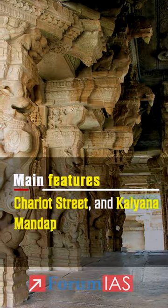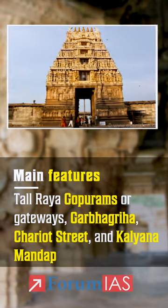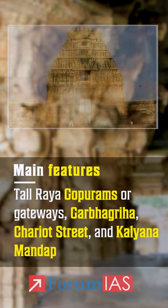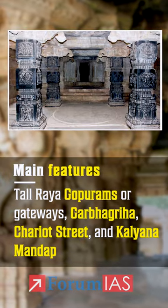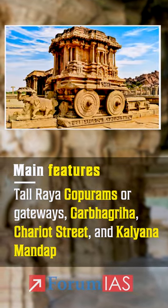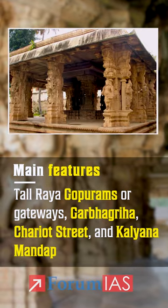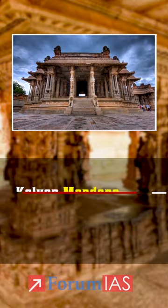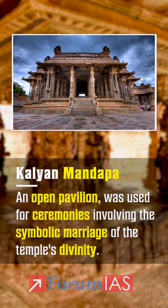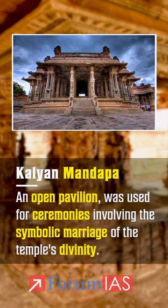Main features of Vijayanagar architecture are Tall Rai Gopurams or gateways, Garbhigrah, Chariot Street, and Kalyan Mandap. The Kalyan Mandap, an open pavilion, was used for ceremonies involving the symbolic marriage of the temple's divinity.